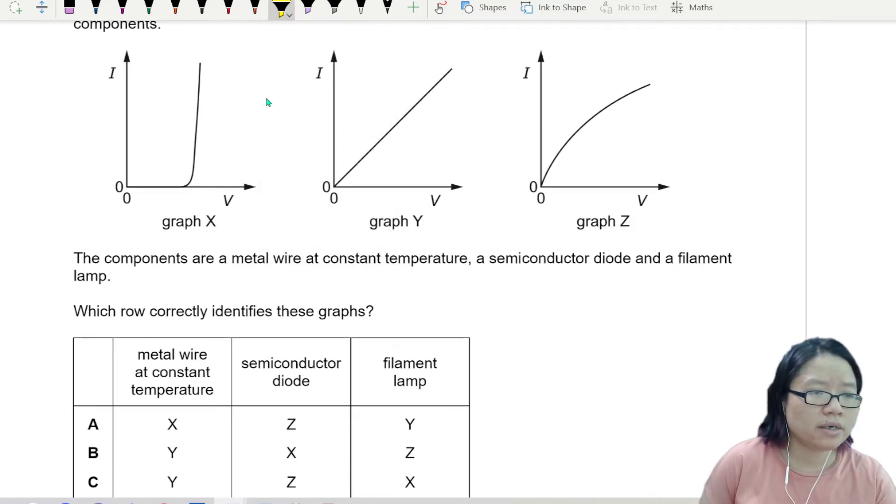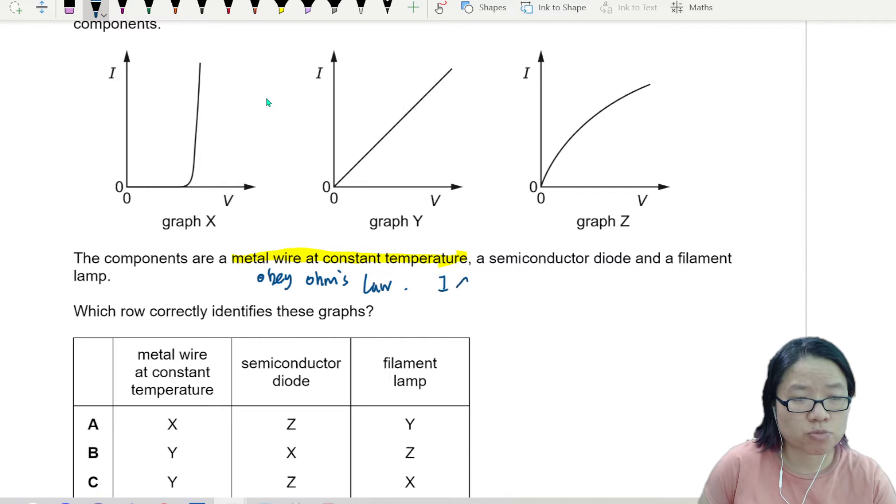The biggest hint here, metal wire at constant temperature, tells me that this one will obey Ohm's law. Which one obeys Ohm's law? I is proportional to V. So this one is already metal wire.